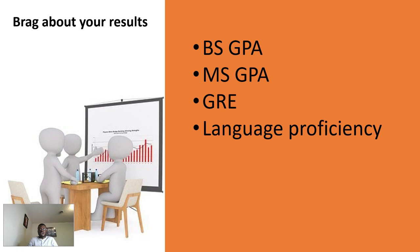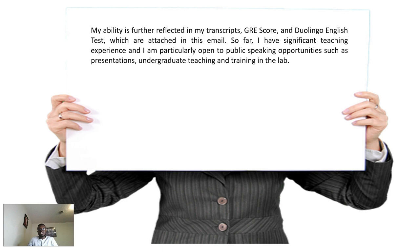You should have a section where you brag about your results. If you have strong bachelor's or master's transcripts, brag about them. If you have a good GRE score, mention it, and if you have strong language proficiency scores, include those too. Example: 'My ability is further reflected in my transcripts, GRE score, and Duolingo English Test, which are attached. I have significant teaching experience and am particularly open to public speaking opportunities such as presentations, undergraduate teaching, and lab training.'